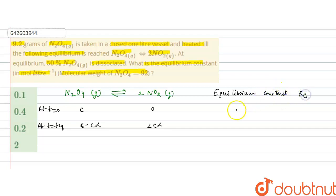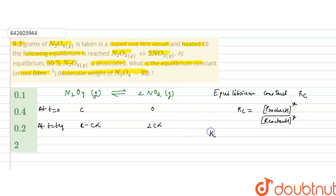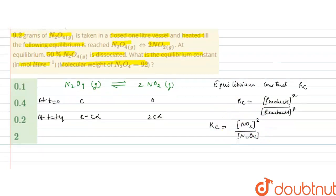The equilibrium constant Kc equals the concentration of products raised to their stoichiometric coefficients divided by the concentration of reactants raised to their stoichiometric coefficients. For this reaction, Kc = [NO₂]² divided by [N₂O₄], since the stoichiometric coefficient of NO₂ is 2 and that of N₂O₄ is 1.